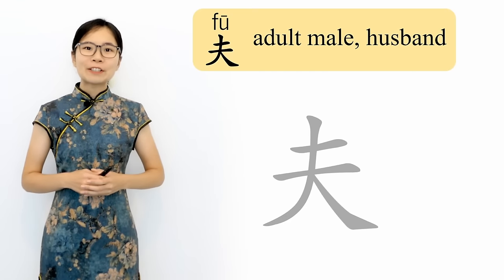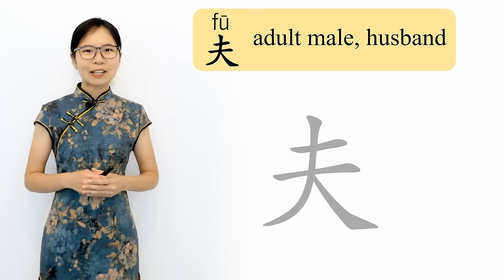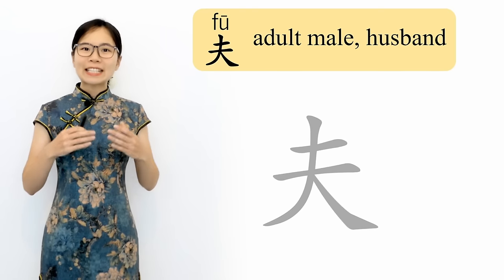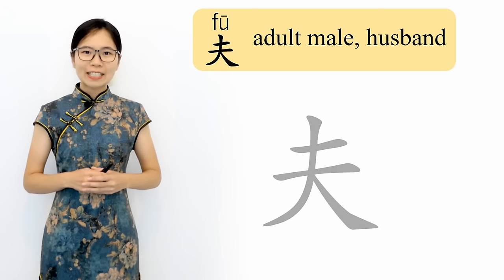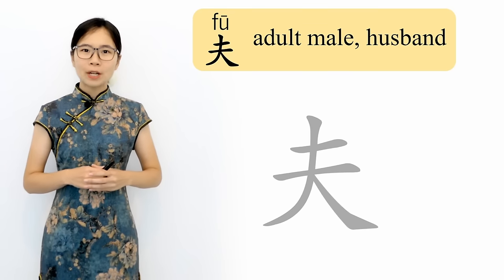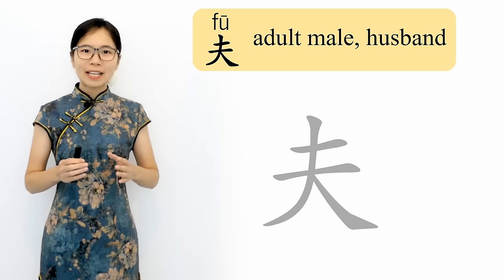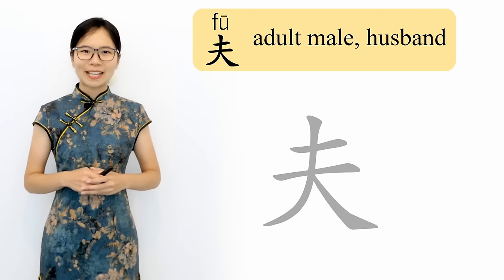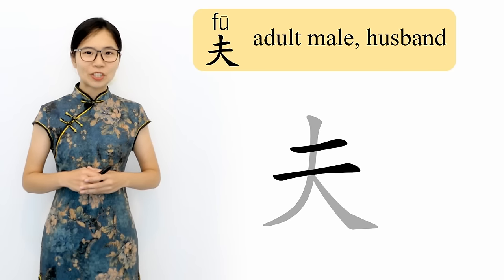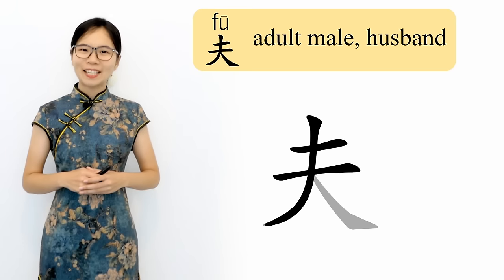夫 is written using four strokes, just like 天. The only difference is that when writing 天, the downward stroke to the left starts at the top horizontal line, whereas with 夫, the downward stroke to the left starts above the top horizontal line. First we write the two horizontal lines starting with the top line, then the big downward stroke to the left, and finally the shorter downward stroke to the right.